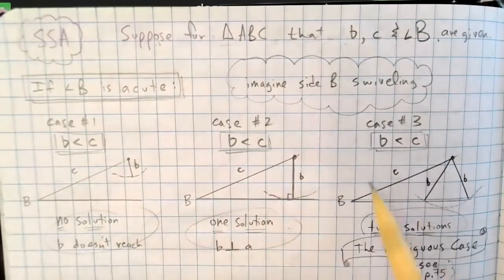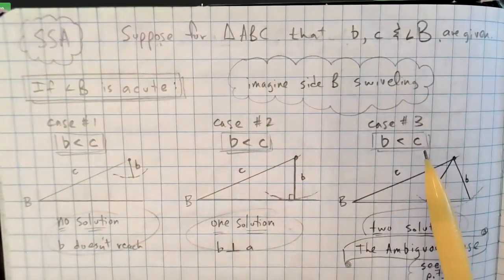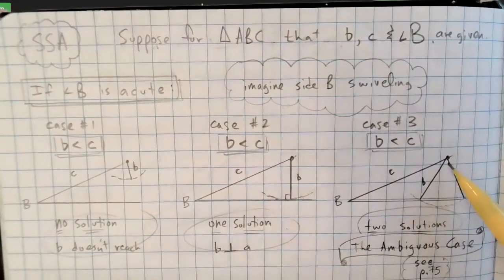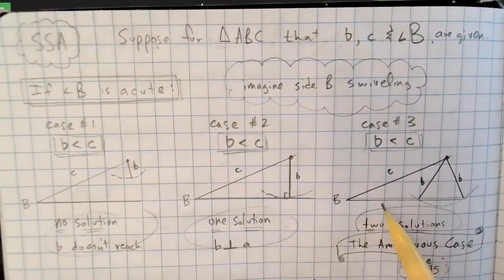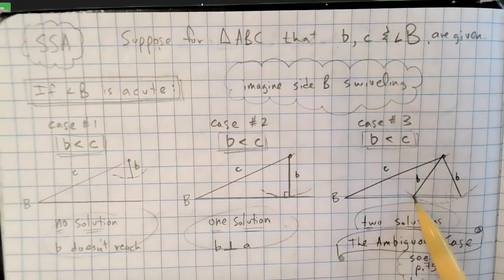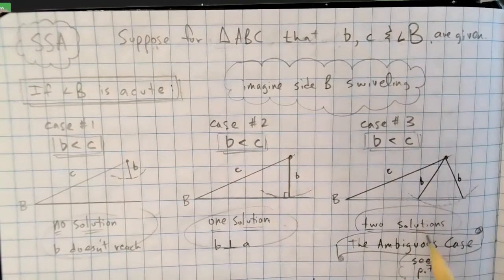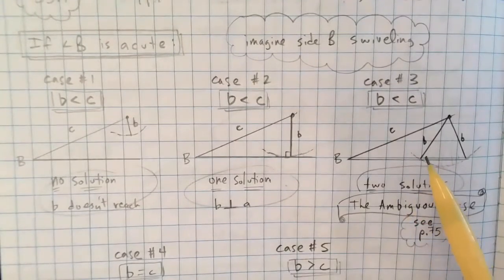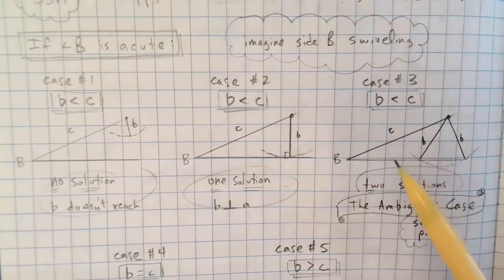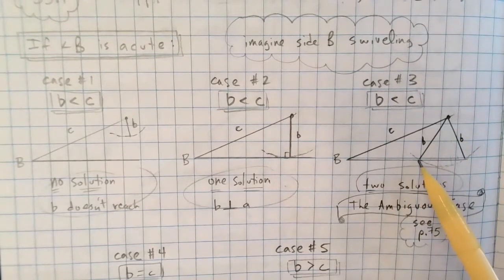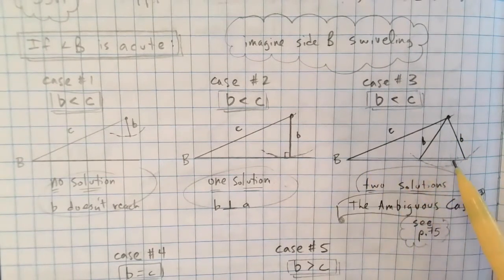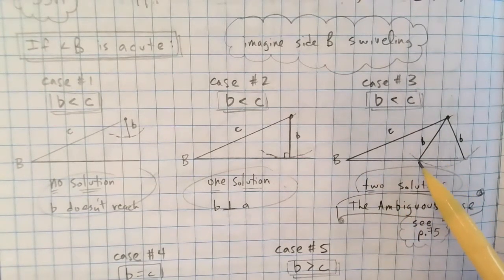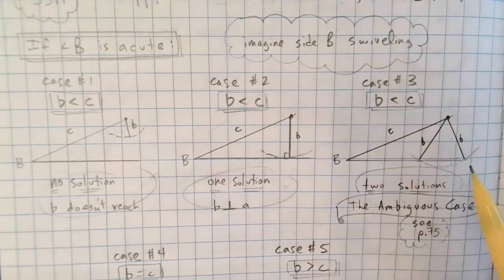But what if b is less than c, but it hits at two different places? If you can imagine side b, you know, kind of just swinging around here, hoping to find that third side of the triangle. And it does connect here at this point and here at this point. This is what's called the ambiguous case, which we're going to be talking about on the next page of notes. There's two different solutions for that triangle. One where b hits, this would be, what side would this be? Side a. This would be the angle A there. So this would be side a. Side b hits side a here and here.